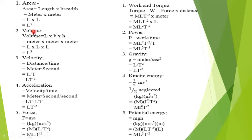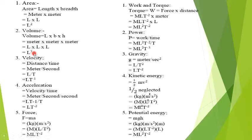The second dimension is volume. Volume formula: length into breadth into height. The units are meter, meter, and meter, with symbols L, L, and L. Since the base is the same, we add the powers and we get L cubed.